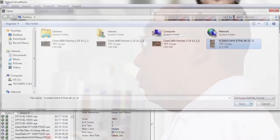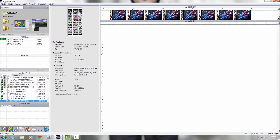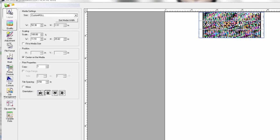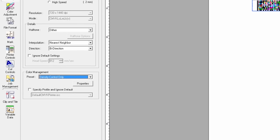Now it's time to create the ICC profile. First, print the ICC profile target using your new parameters. Apply density control only.